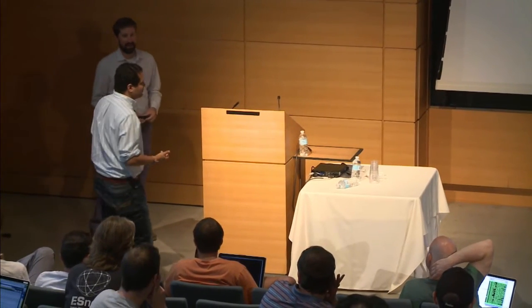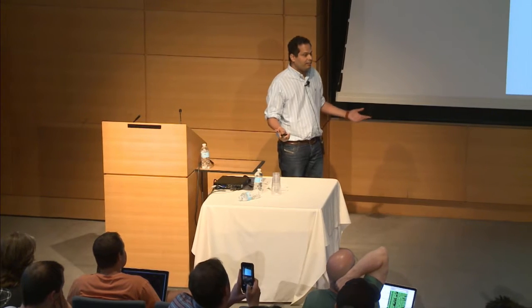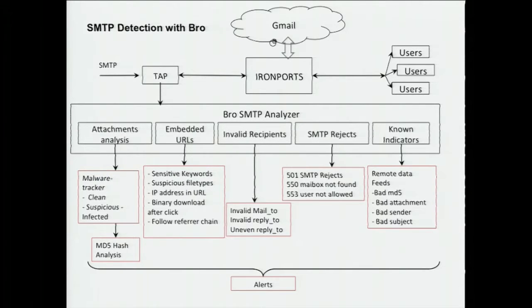How was this actually detected? Somebody called us and said there was a mail they weren't expecting — a human detected it. Ashish had talked extensively at a previous BroCon about their entire SMTP detection platform. Their current SMTP detection covers attachment analysis, embedded URLs, invalid recipients, rejection codes, and known indicators fed from external data. Despite this comprehensive setup, they still missed it.